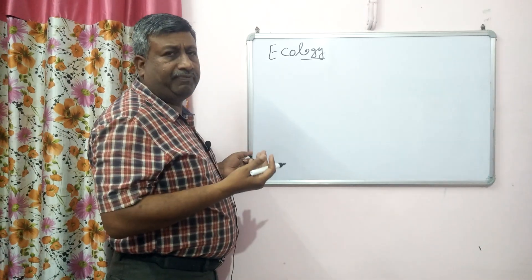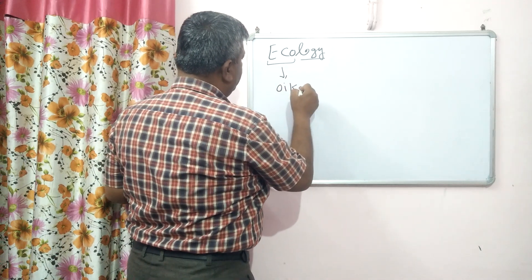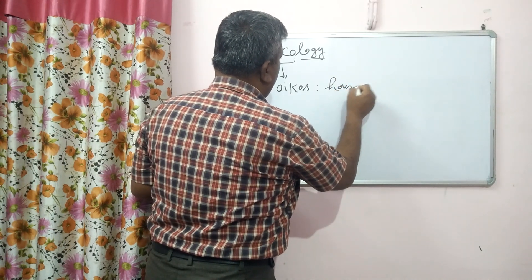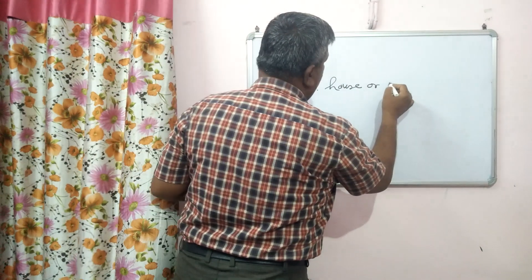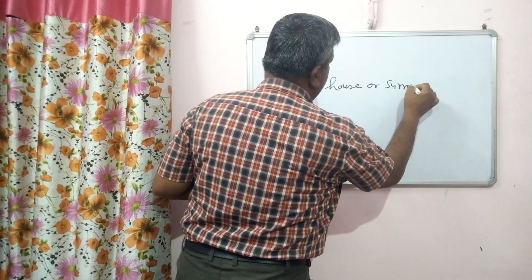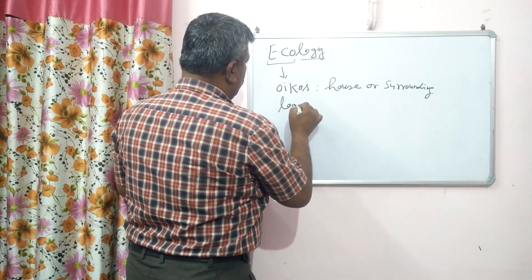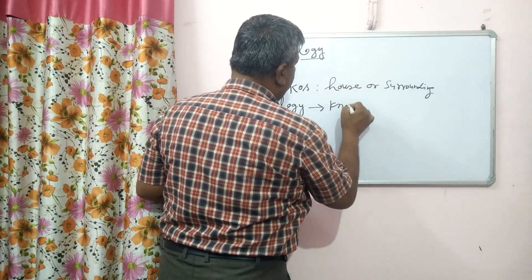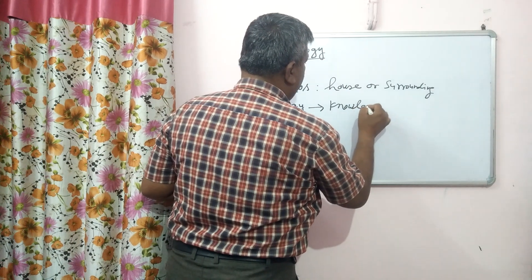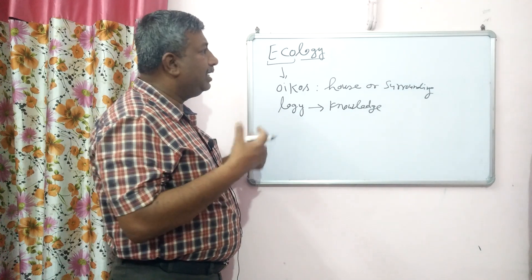Actually this term is originated from the Greek word ECO. ECO means oikos — oikos is a Greek word which means household, house or surrounding. If we look at the meaning of Ecology: ECO plus Logi. Logi means Logos, which means knowledge, to study. So if we study or we have the knowledge about the surrounding of an organism, then it is Ecology.